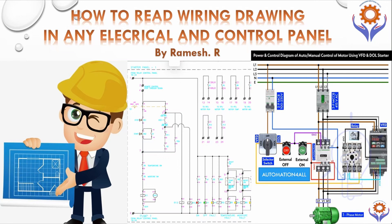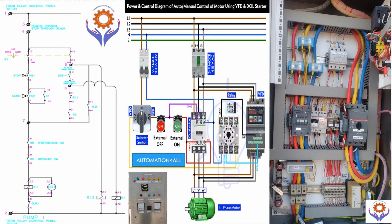Hello everyone. If you are struggling to read the wiring diagram, don't worry. By the end of this video, you will have a good understanding of how to read the drawings and modify the panel. An electrical wiring diagram is a simplified, conventional, semantic representation of an electrical circuit. It shows the components of the circuits with simplified shapes. Let's begin now.